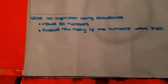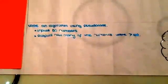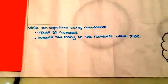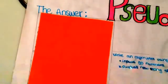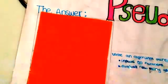Now it's your turn. Write an algorithm using pseudocode which inputs 50 numbers and outputs how many of the numbers were greater than 100. Pause this video to answer the question. When you are done, play the video to find out the answer.